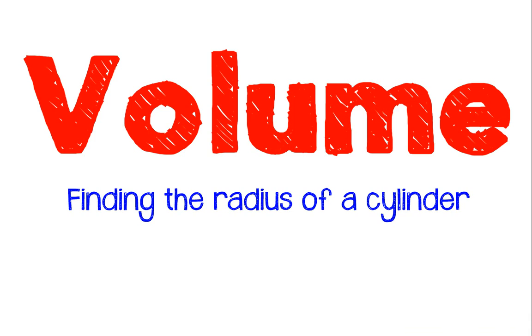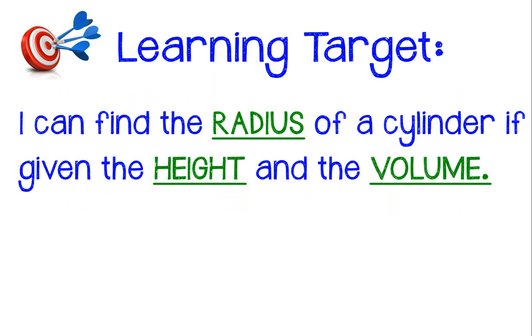In this video, we're going to be able to find the missing dimension of a cylinder when given two of the other values. So in this particular video, we will be finding the radius of a cylinder. By the end of this lesson, you should be able to say that you can find the radius of a cylinder if you are given the height and the volume.